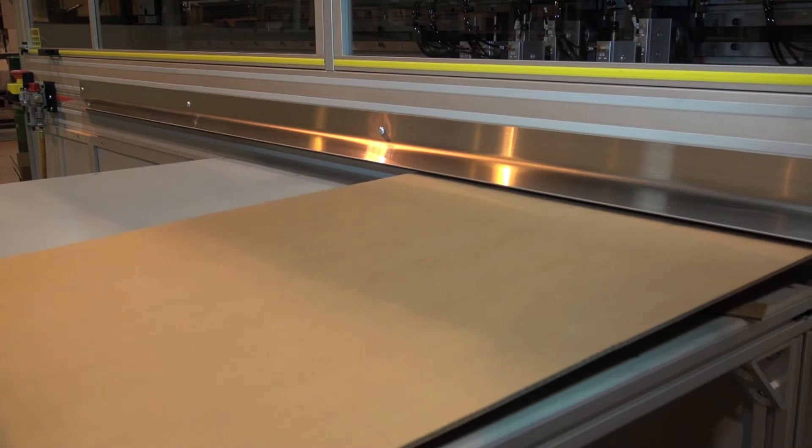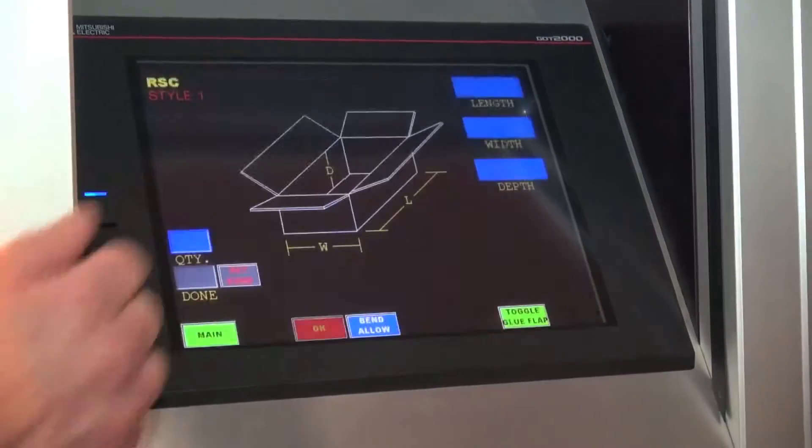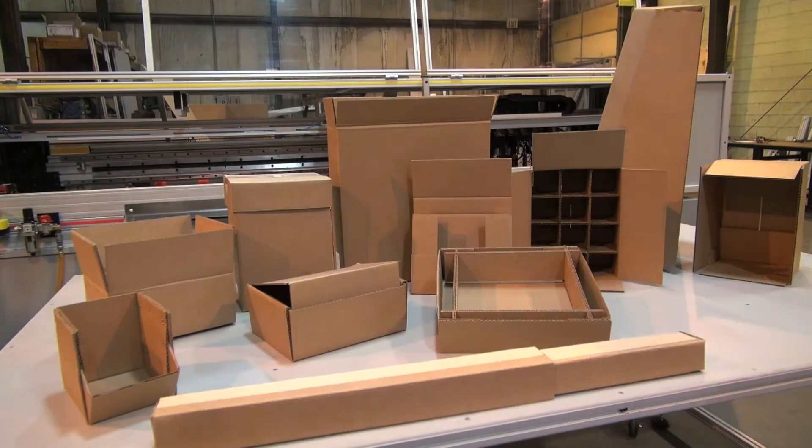This is an on-demand custom box making machine. You don't have to put any boxes in stock. You have a stack of sheet and at the touch of a finger you've got 30 different styles at any size, from a golf ball to a refrigerator.